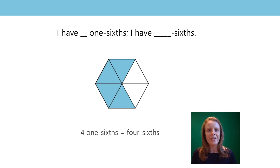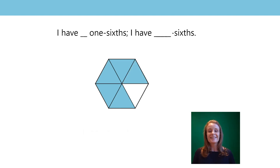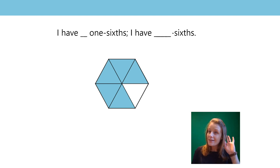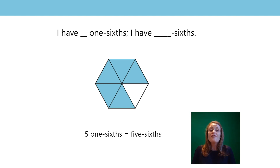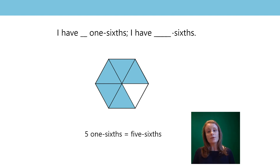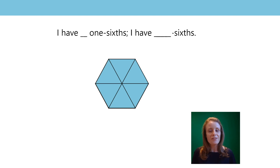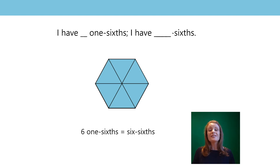Guess where I'm going to go now. Did you guess? How many equal parts have been shaded? Five. I have five one sixths, I have five sixths. And we can write it: five one sixths equals five sixths. I've filled in all of my hexagon. How many sixths have I got now? Well done — I've got six one sixths, or six sixths.